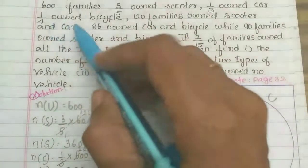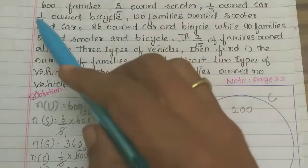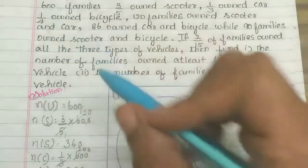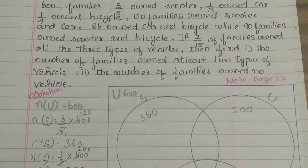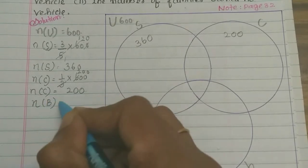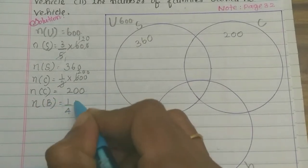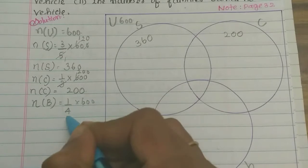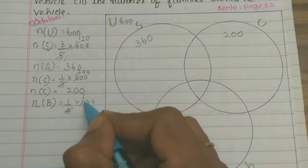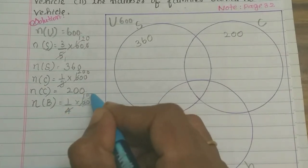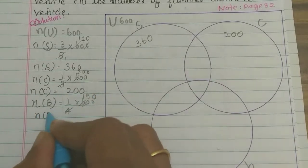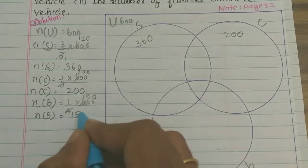Next, 1 by 4 owned bicycle. So 1 by 4th part of 600 families owned bicycle. Number of persons using bicycle is equal to 1 by 4 of 600. 4 goes into 600 — 150. So number of families using bicycle is 150 families.